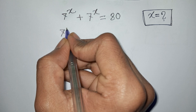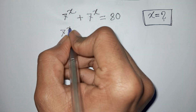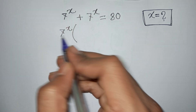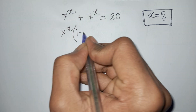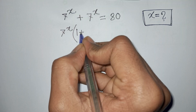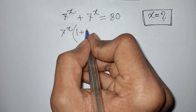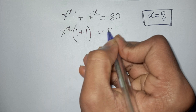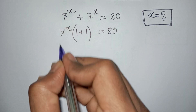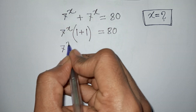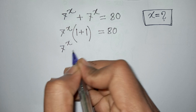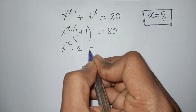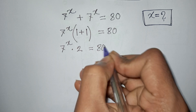I can take 7 power x common from the left side. So, 7 power x is factored out of the bracket, giving 7 power x times (1 plus 1), which equals 7 power x multiplied by 2, and that is equal to 80.